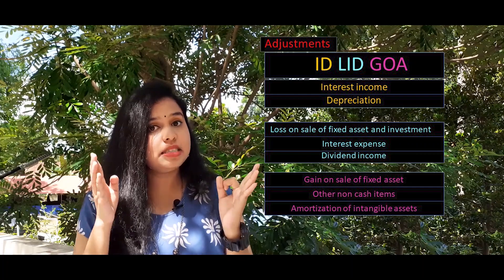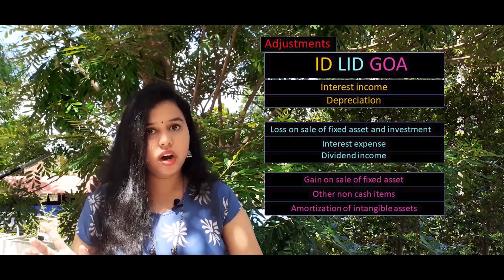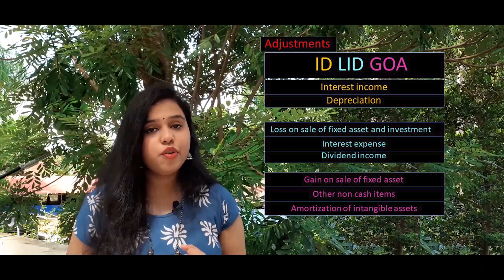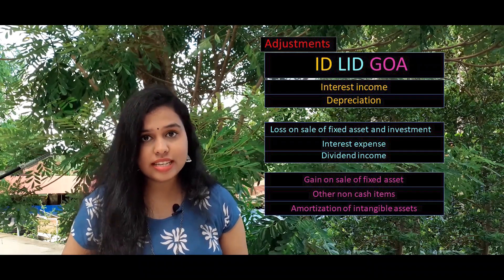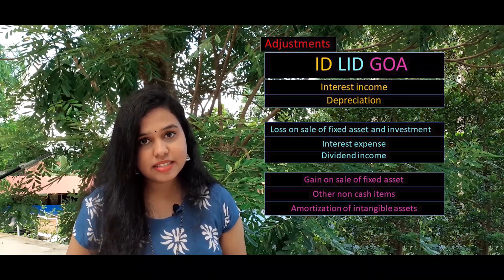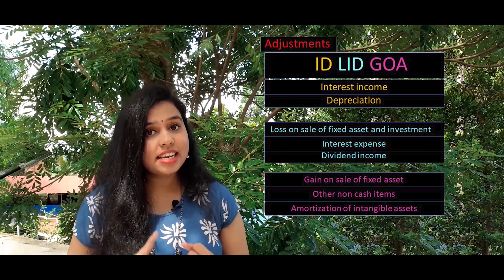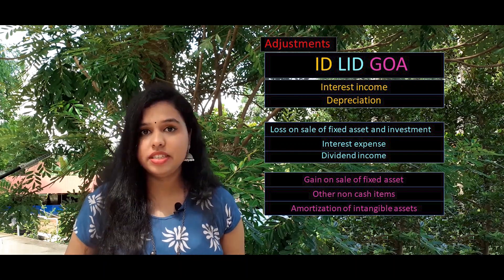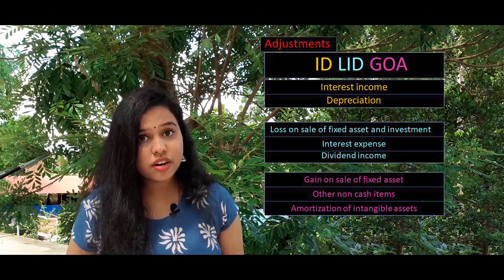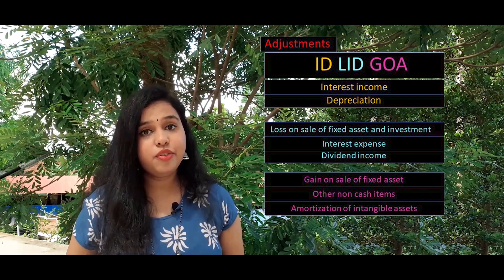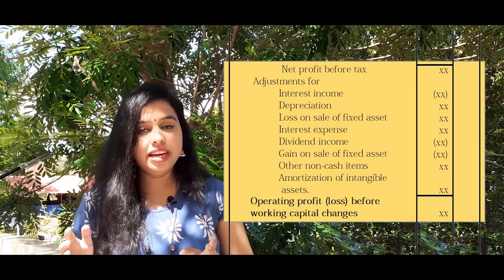This is the adjustment code: ID, LID, GOA. ID — I for interest income and D for depreciation. LID — L for loss on sale of fixed asset, I for interest expense, and D for dividend income. GOA — G for gain on sale of fixed asset, O for other non-cash items, and A for amortization of intangible assets.